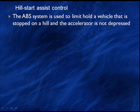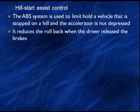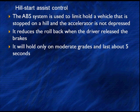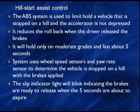Hill start assist holds the vehicle when stopped on a hill with the accelerator not depressed. It reduces rollback when the driver releases the brakes — useful when there's a delay moving your foot from the brake to the gas. It will only hold on moderate grades and only lasts about five seconds. The system uses wheel speed sensors and yaw rate sensors to determine that the vehicle is stopped on a hill with the brakes applied. The slip indicator light will blink, indicating the brakes are about to release when the five seconds are expiring.